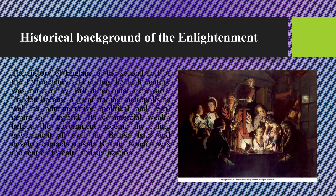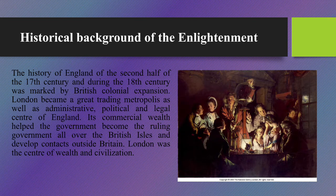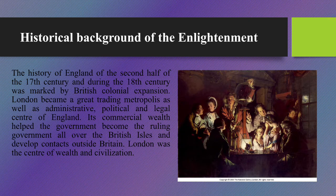English literature of the period may be characterized by the following features. First, the period saw the rise of political pamphlets and essays, but the leading form of the Enlightenment became the novel — poetry as in the heroic age of Shakespeare gave way to the prose age of essays and novelists. The prose style became clear, graceful, and polished. Second, the hero of the novel was no longer a prince, but a representative of the middle class. And lastly, literature became very instructive: problems of good and evil were set forth, and writers tried to teach their readers what was good and what was bad from their own points of view.